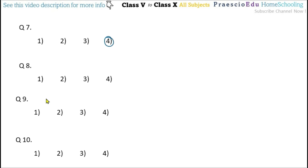Question number eight: in the given figure, which group of points are interior? In this figure, V, P, O, and S are the interior points, and these four points are given in option number three.